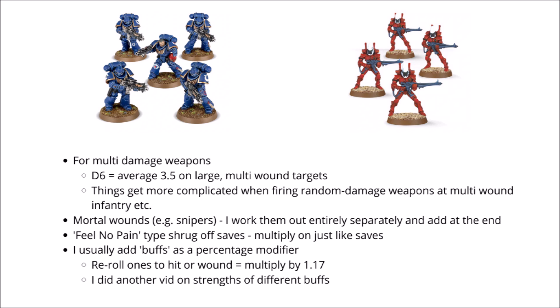You can treat feel-no-pain type shrug-off saves, such as Death Guard Disgustingly Resilient, just like another set of saves that you add on to the end. If those Eldar Guardians had something like that, you'd just multiply by four divided by six again, as that's the number of successful rolls that will get through Disgustingly Resilient. You can also add buffs — say what would happen if these Intercessors were in range of a Captain. Re-roll 1s on hit rolls and wound rolls will typically equate to a 17% increase in eventual damage output, so you could just multiply your whole damage total by 1.17 at the end if you have a Captain nearby. I did an entire extra video on which buffs have different percentage changes, and I'll put the link in the video description.